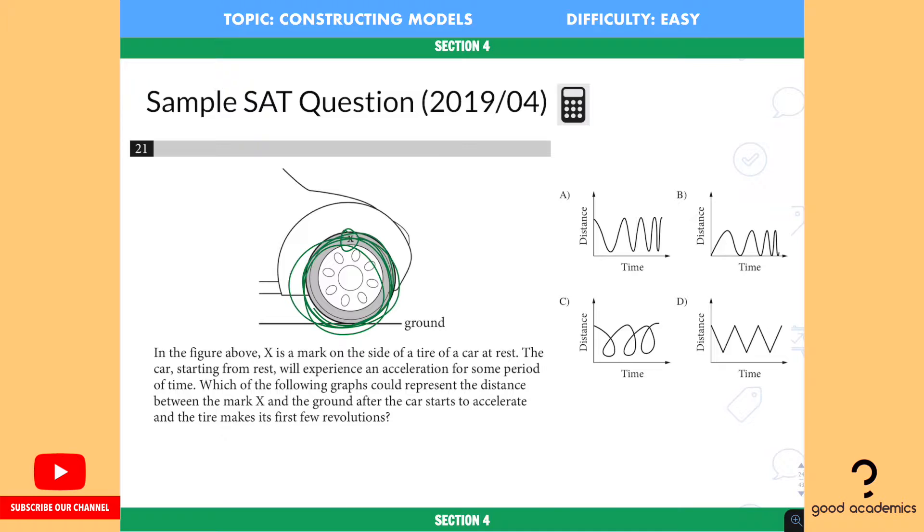So the first graph that we can read out is C. C is nonsense because time doesn't go back. That's weird.